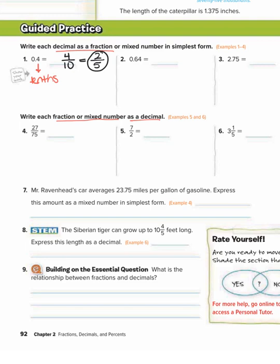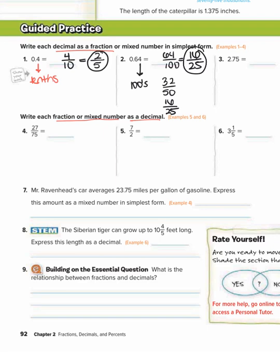Number two: 0.64, or 64 hundredths. Because it's in the hundredths place, we write it as 64 over 100. Then we simplify: divide by 2 to get 32 over 50, then divide by 2 again to get 16 over 25. That can't be simplified anymore, so the simplest form is 16 over 25.